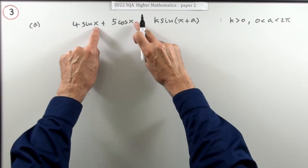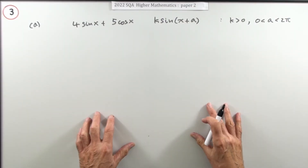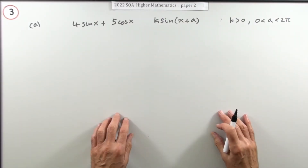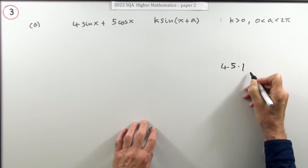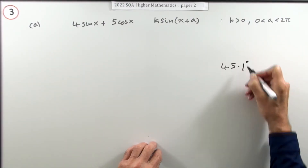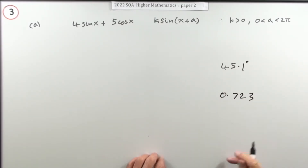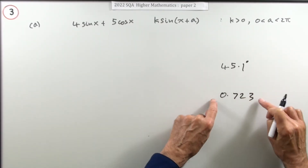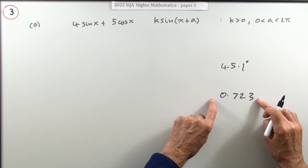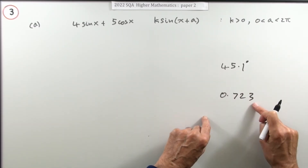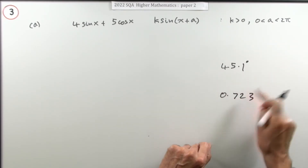Notice it's not in degrees — there are no degree signs — it's in radians. You should get used to using your calculator and putting the answer down in radians. If you've got something like 45.1 in degrees versus something like 0.723 in radians, somehow the decimal just looks much friendlier, even though they've both got roughly the same number of figures.